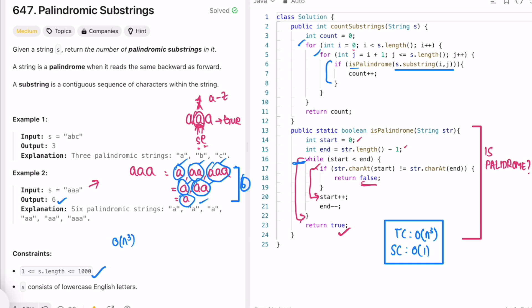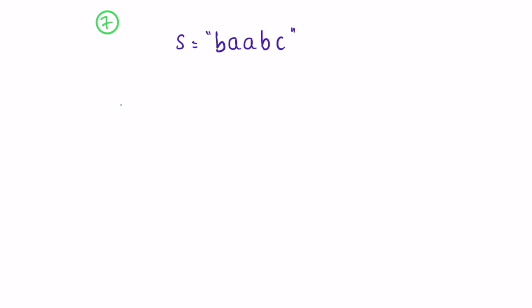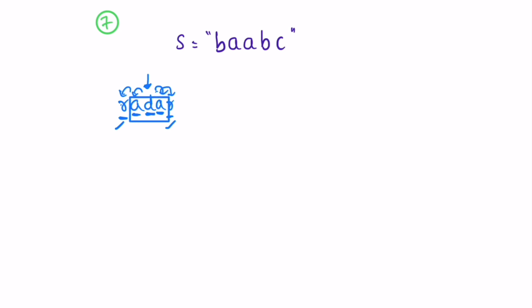Now let's look at a better approach. Keep in mind how we check if a string is a palindrome. Let's take the word "radar" - this is a palindrome string. We first check if the single character is a palindrome - yes, every single character is a palindrome. So we expand to its left and to its right. We check if the left and right characters are the same - yes, they are. So this entire string is also a palindrome. We keep expanding and checking - if those outer characters are also the same, the overall string is also a palindrome. This is the main idea.